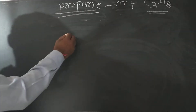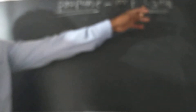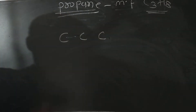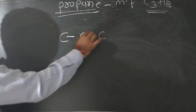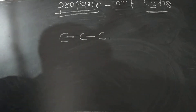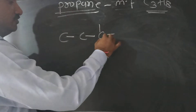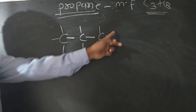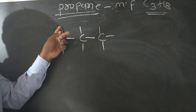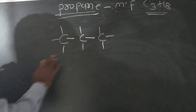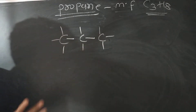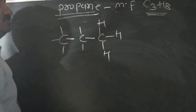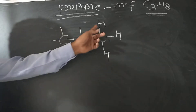To draw the structural formula of propane, first write how many carbons there are. There are three carbons, so write carbon one, two, and three. Join each carbon by a single covalent bond. Carbon has tetravalency, so consider the bonds: one, two, three, and four. Each carbon has four bonds. Now write hydrogen here, here, and here to satisfy the valence of carbon.